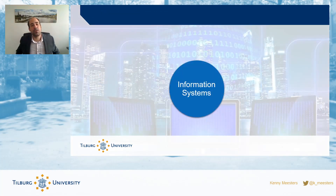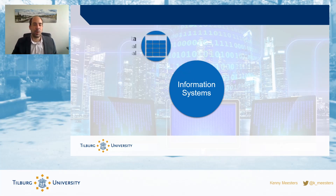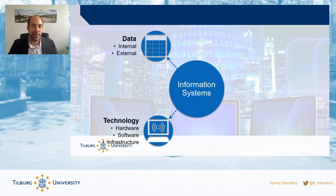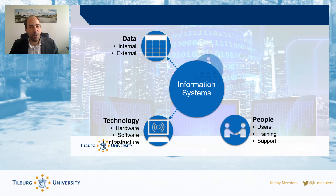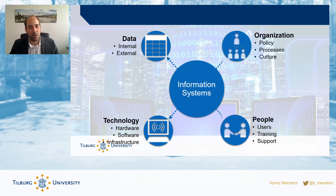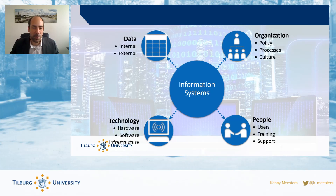So finally wrapping it up, let's talk again about these four dimensions of information systems: data, information, technology, software, hardware, people — the customers using the systems — and the organization, how you are organized. Let's take a look at those four components when it comes to e-commerce.